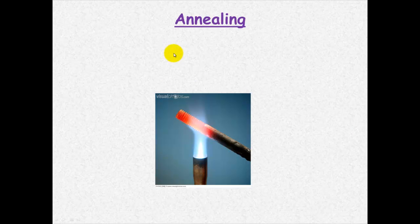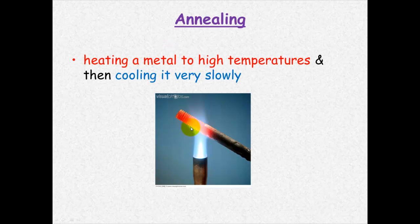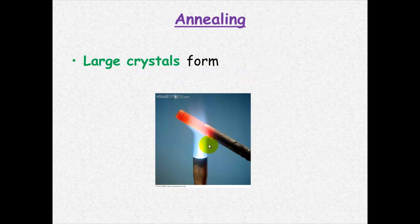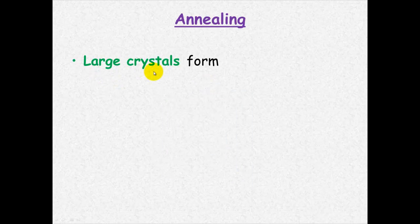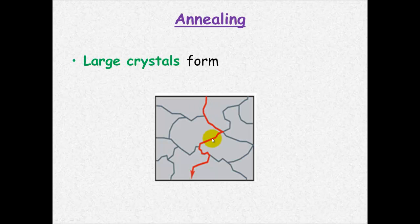Annealing involves heating the metal to a very high temperature and then cooling it very slowly. This causes large crystals to form. And with large crystals, we have this type of structure here. We get a softer but a less brittle metal, so it is more malleable.